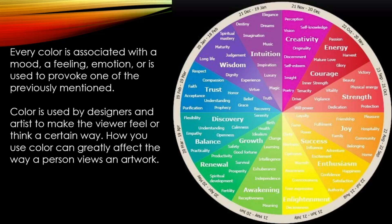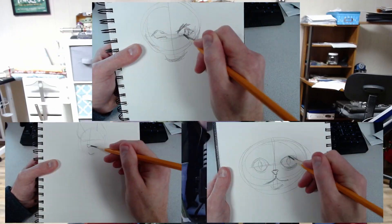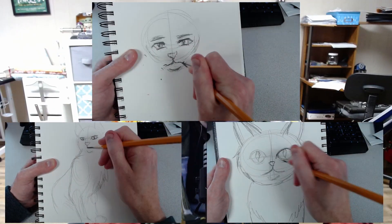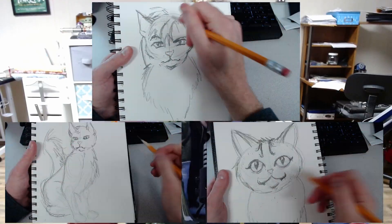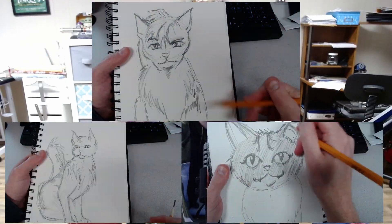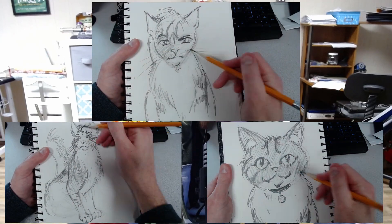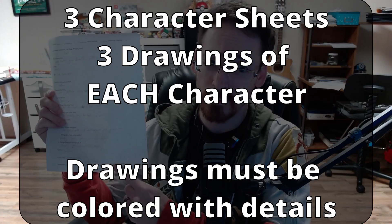You are then going to take this data sheet that you made and make three different character drawings for this one character. You are not only going to have three drawings — you're going to have nine drawings, because I want you to create three separate characters with three separate drawings each.